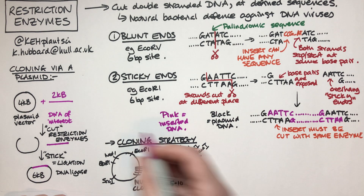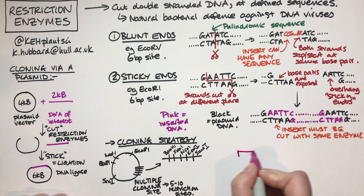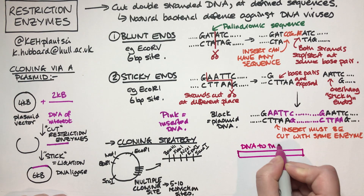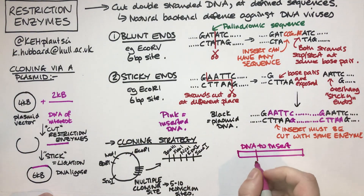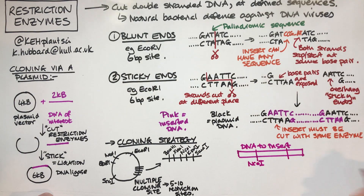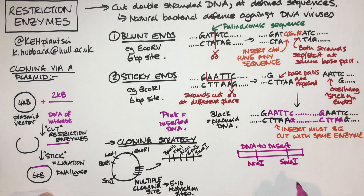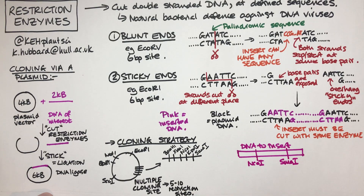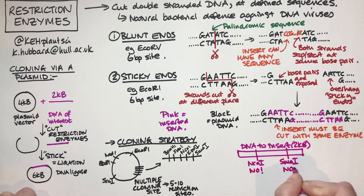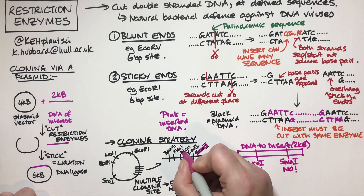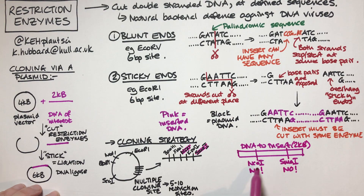I've got multiple different restriction enzymes basically immediately after each other, so I can choose which one I want to cut with, giving me flexibility. Now let's look at my DNA of interest — my gene of interest that I'm going to insert. I could look at the sequence of that and work out what sites it has inside the insert. Let's say naturally in there there's an NcoI site and an SmaI site — I don't want to cut up my DNA to insert, I want to put the whole 2kb in, so I definitely do not want to use NcoI or SmaI.